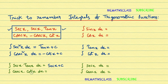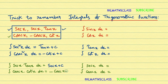Integral of cosecant x times cot x dx — you observe the second row of the box: cosecant x and cot x are accounted for, and what remains is minus cosecant x. So integral of cosecant x times cot x dx is minus cosecant x + c.